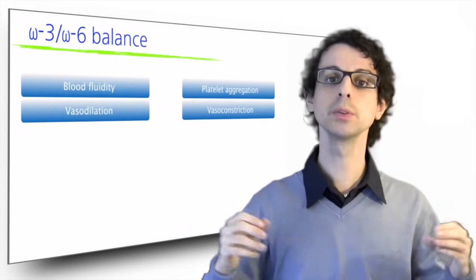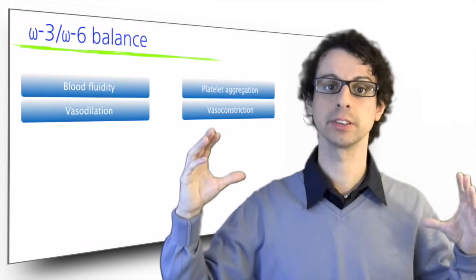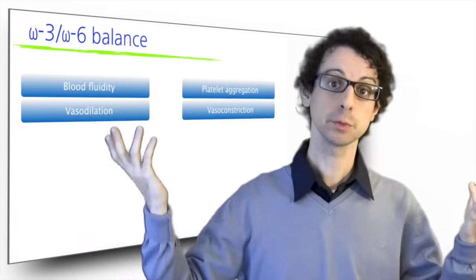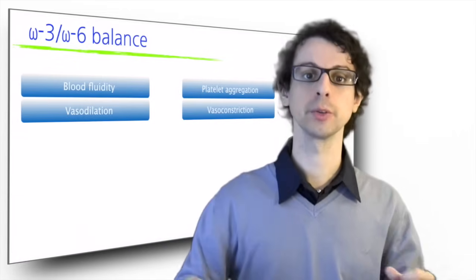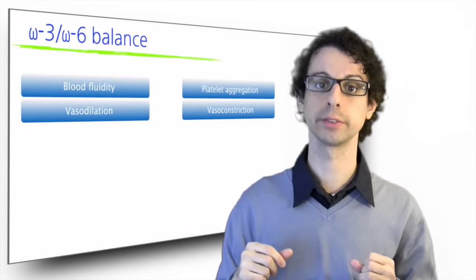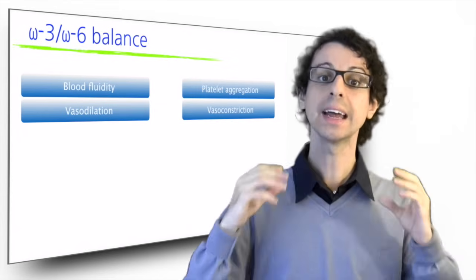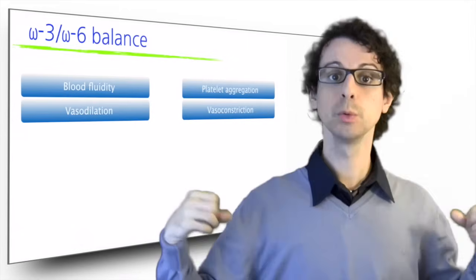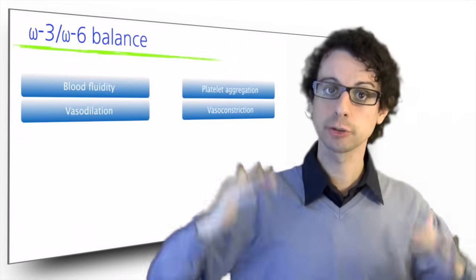Prostacyclins also promote vasodilation in our arteries, while thromboxanes promote vasoconstriction. Excessive vasoconstriction causes high blood pressure and cardiovascular risk, but on the other hand, excessive vasodilation would cause a dangerous blood pressure drop, to the point of fainting.